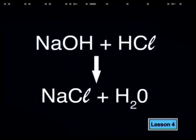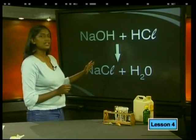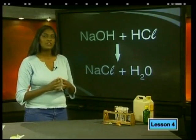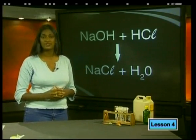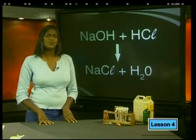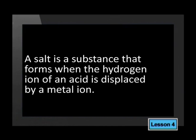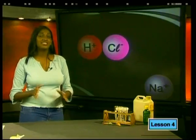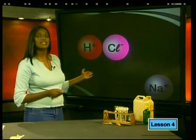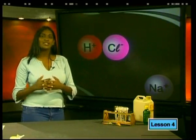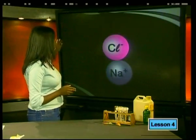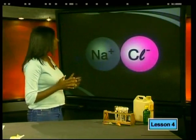Sodium hydroxide plus hydrochloric acid react to form sodium chloride and water. Notice that the equation is balanced as it stands. Sodium chloride belongs to a group of substances called salts — in fact, sodium chloride is known as table salt and is used to flavor food. A salt is a substance that forms when the hydrogen ion of an acid is displaced by a metal ion. Starting with hydrochloric acid, when hydrogen is displaced by sodium, we get sodium chloride.